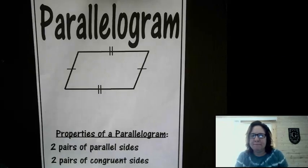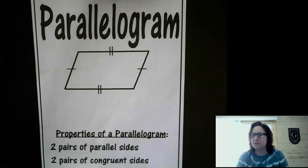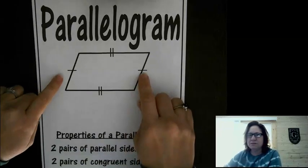This is a parallelogram, and it has two pairs of parallel sides and two pairs of congruent sides. That's what these little tick marks mean.